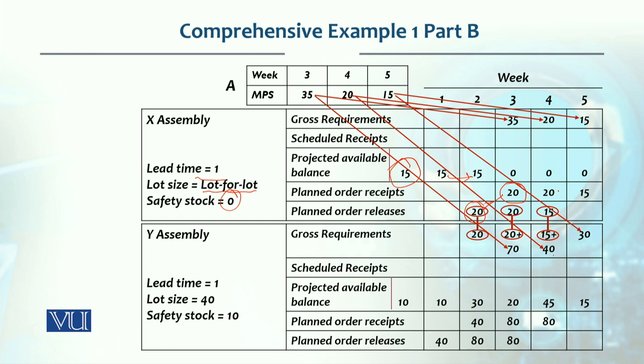From A's production: 35 units in the third week require 70 Y units (35×2), 20 units in the fourth week require 40 Y units (20×2), and 15 units in the fifth week require 30 Y units (15×2). Total gross requirements for Y are: 20 in second week, 90 in third week, 55 in fourth week, and 30 in fifth week.